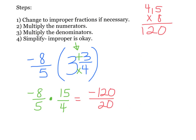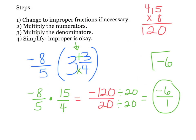My next step is to simplify. I know that 20 goes into both of those. So negative 120 divided by 20 gives me negative 6, and 20 divided by 20 is 1. So my final answer is negative 6 over 1, which is better written as just negative 6. That's my simplified answer.